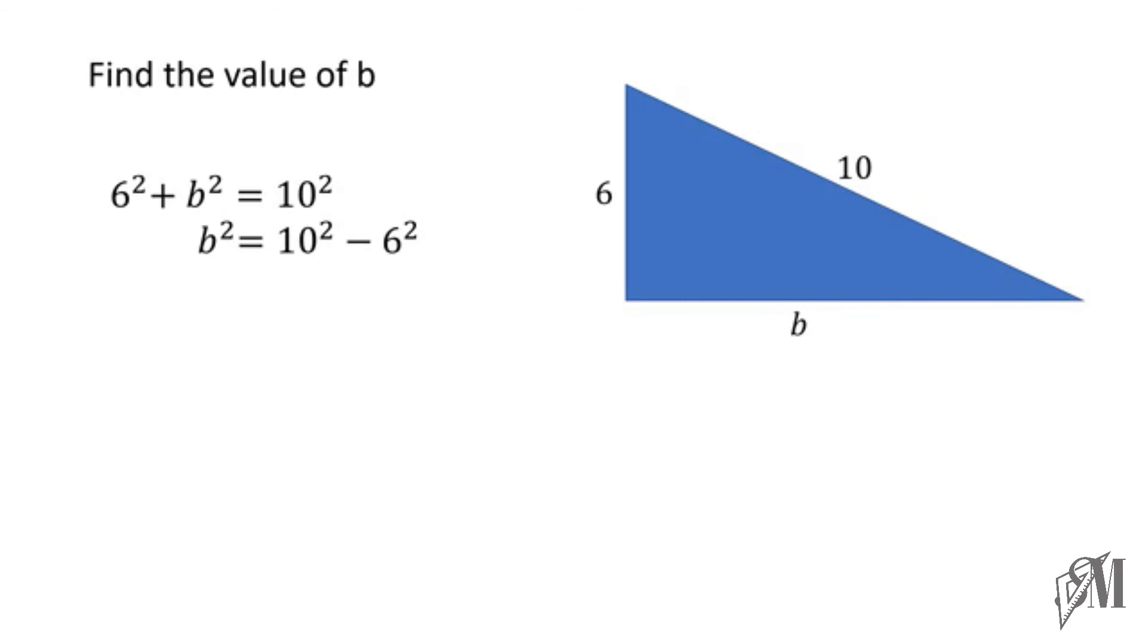Once we write this, we solve for b. b² = 10² - 6², that is b² = 100 - 36. Once you do the subtraction, you get b² = 64. We know 64 is the square of 8, therefore b equals 8 units.